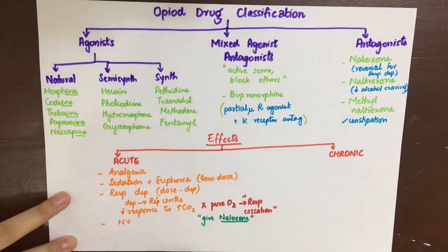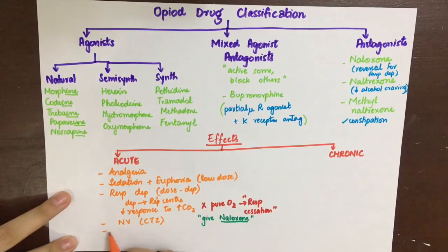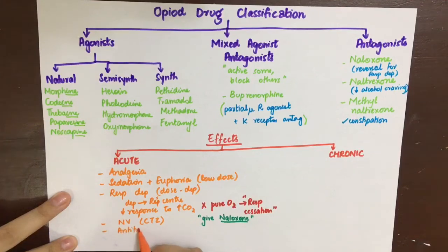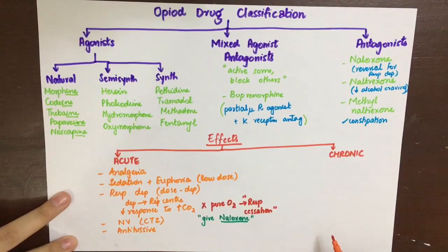Opioids cause nausea and vomiting by directly stimulating the chemoreceptor trigger zone in the medulla. They also have an antitussive action by suppressing the cough center in the medulla. The main drugs used for antitussive action are codeine and dextromethorphan.